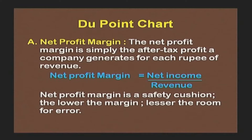Net profit margin could be computed using this formula. One thing we need to notice is that net profit margin is a safety cushion — the lower the margin, the lesser the room for error. So it should not be on a lower side.